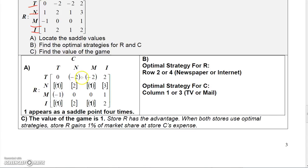Finding the minimums in each row: negative two (appearing twice) in row one, two ones in row two, negative one in row three, and ones in row four. For the columns, finding the maximums: one in column one, two in column two, one in column three, and three in column four. There are four places where circles and squares overlap, and every one of those entries is a one — so one is the saddle value, appearing four times.